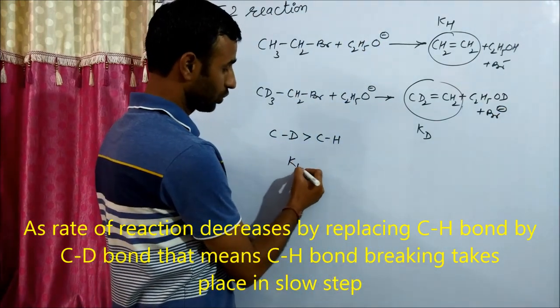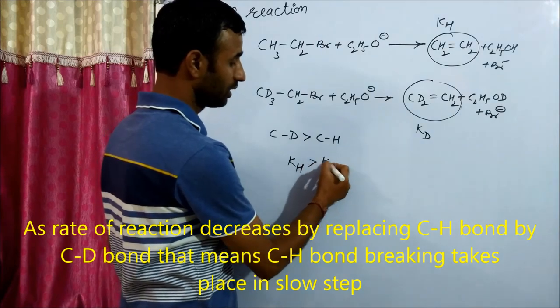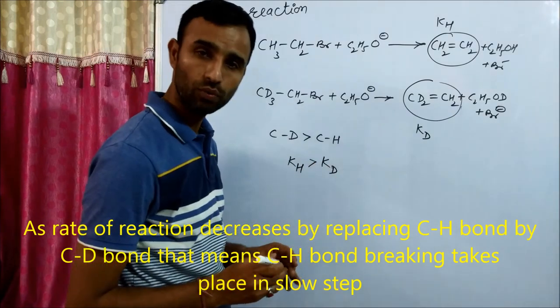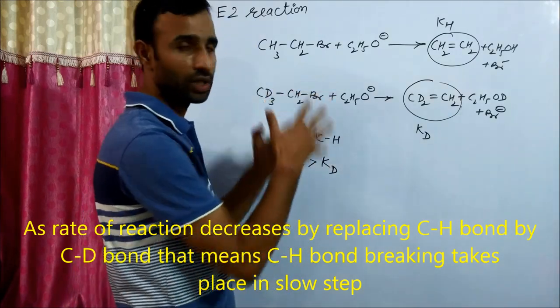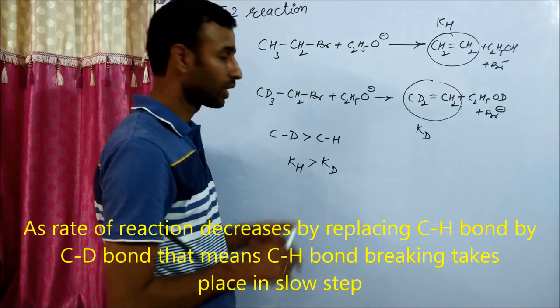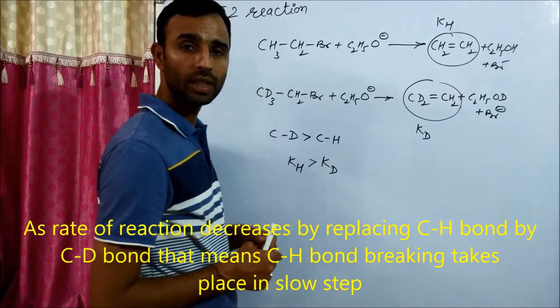So KH, value of KH comes out to be greater than KD. So it proves that rate of reaction depends on the breaking of C-H bond.